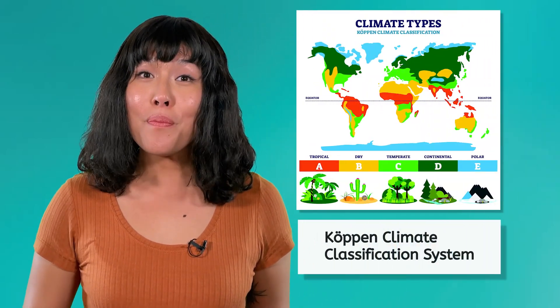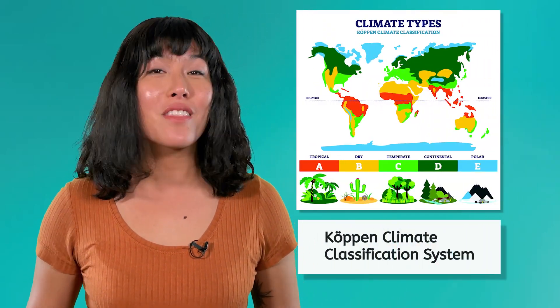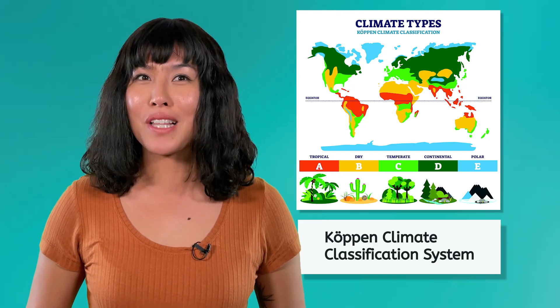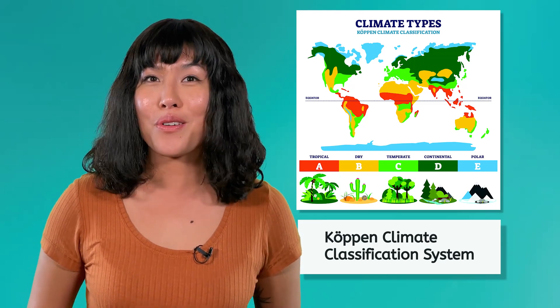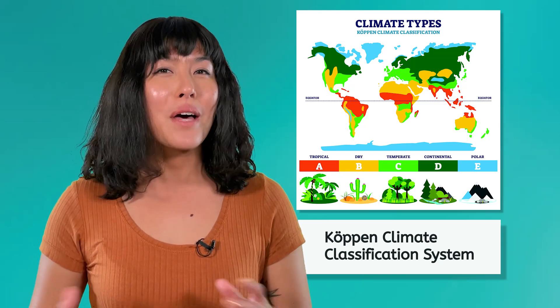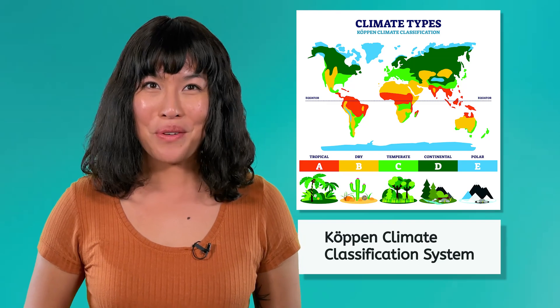You probably noticed that each ecosystem had its own unique climate patterns. Scientists use the Köppen Climate Classification System to define the five main types of climates found on Earth. As we learn about each climate, fill out the chart in your lesson video notes.